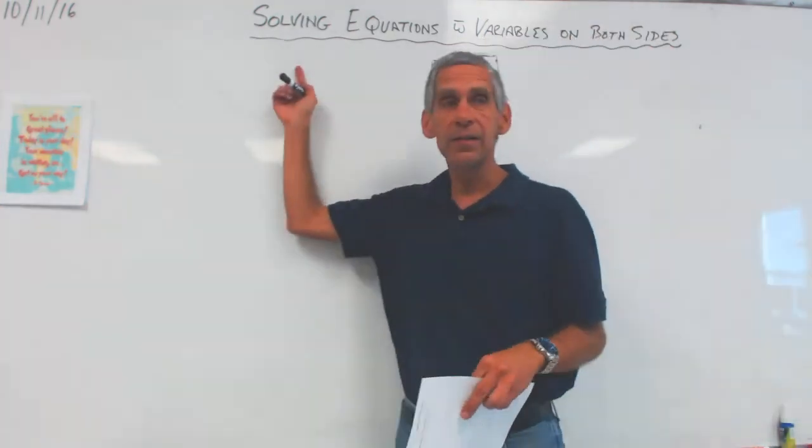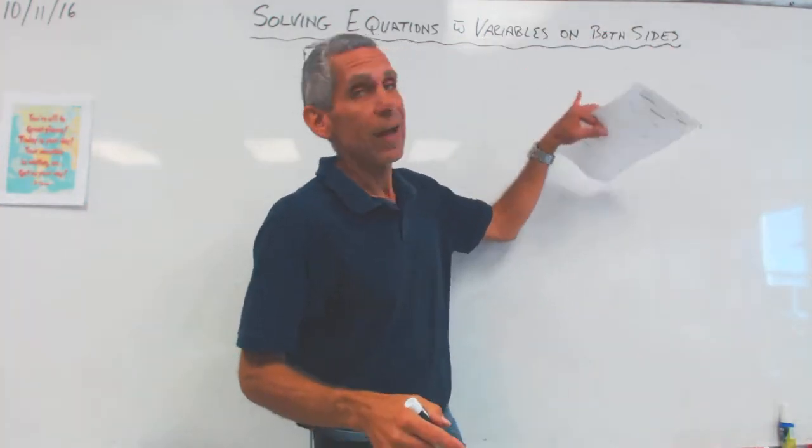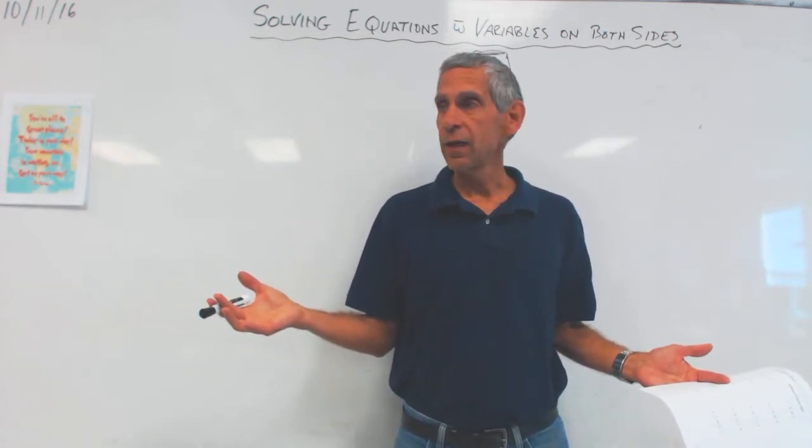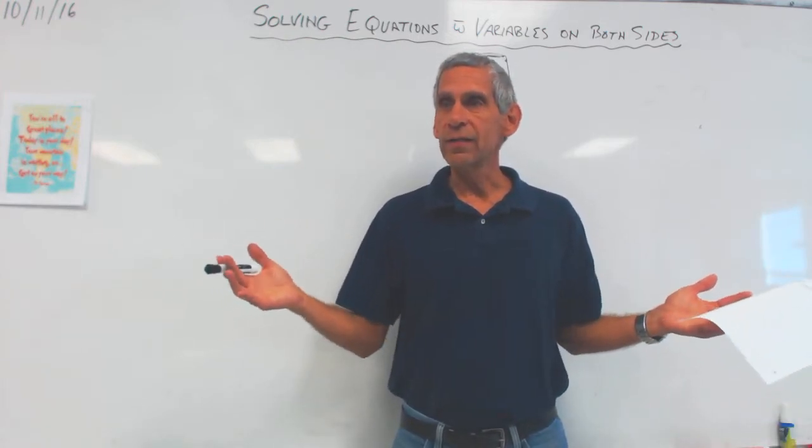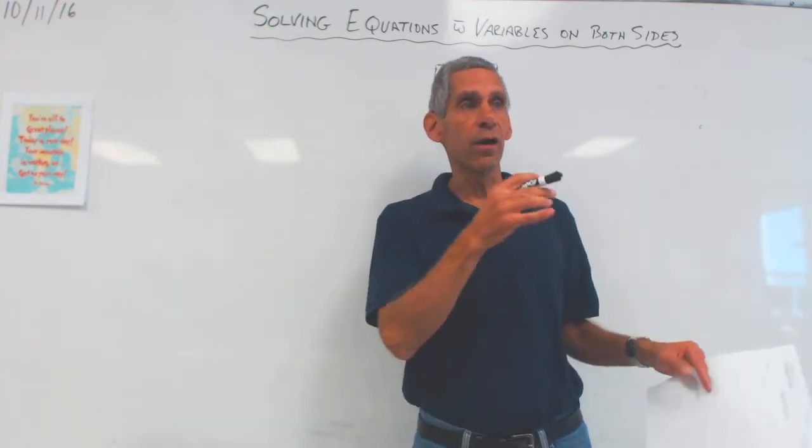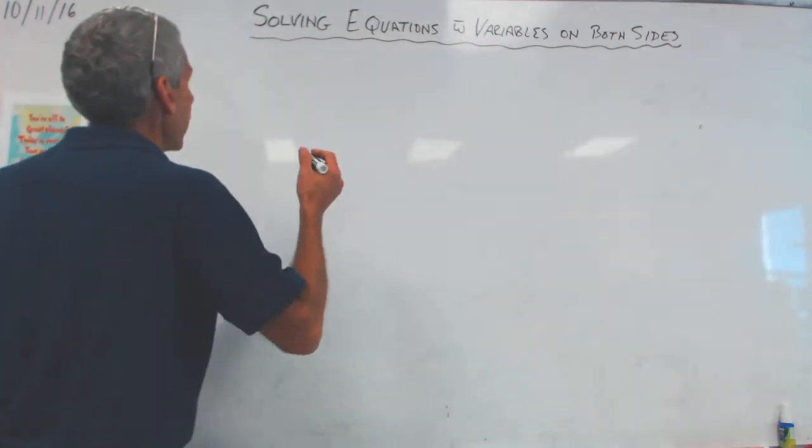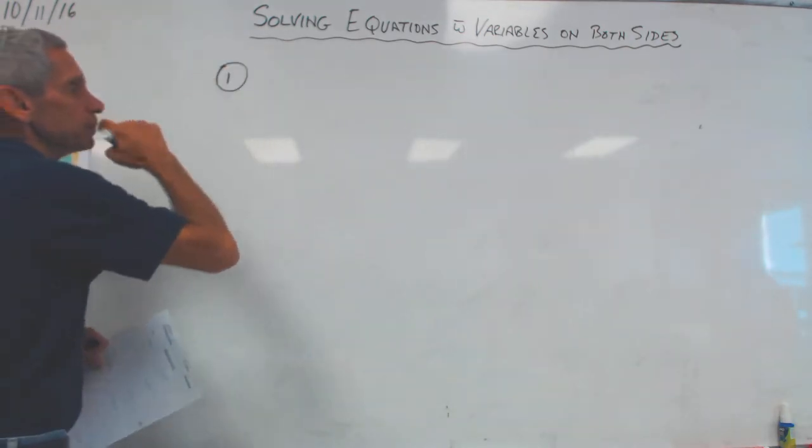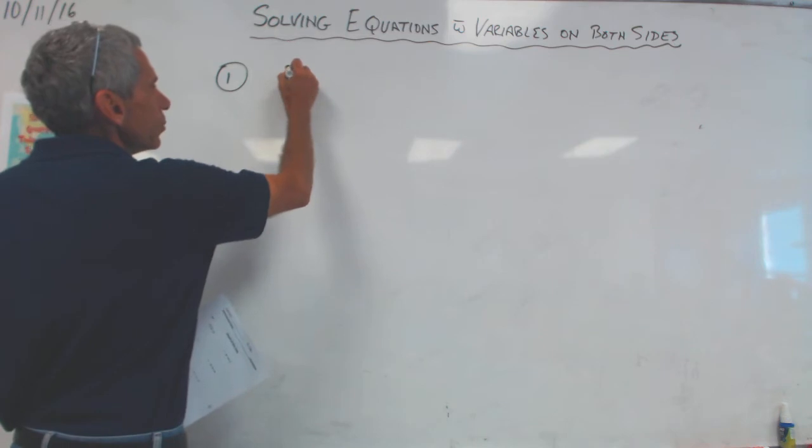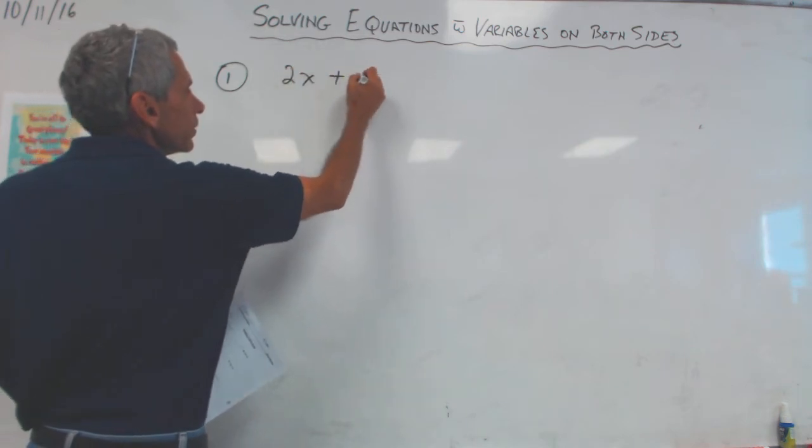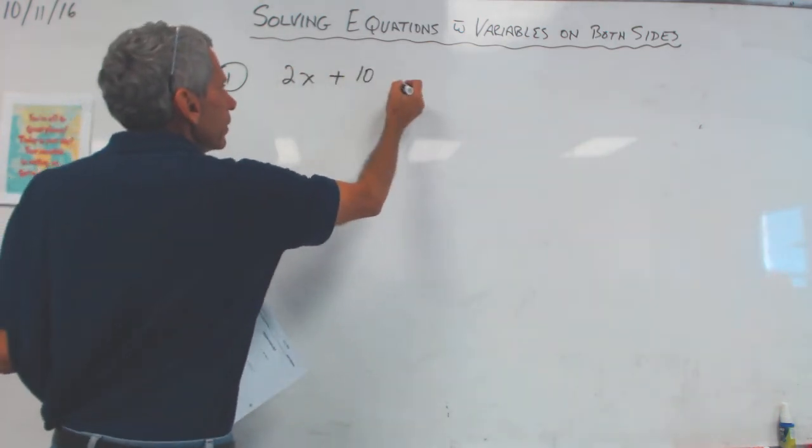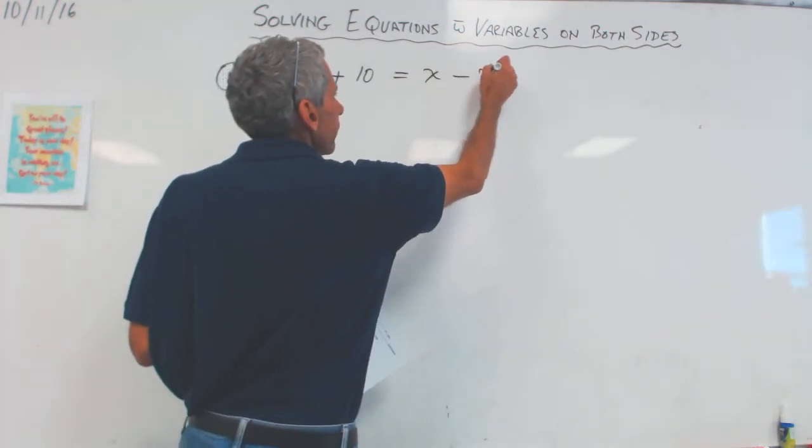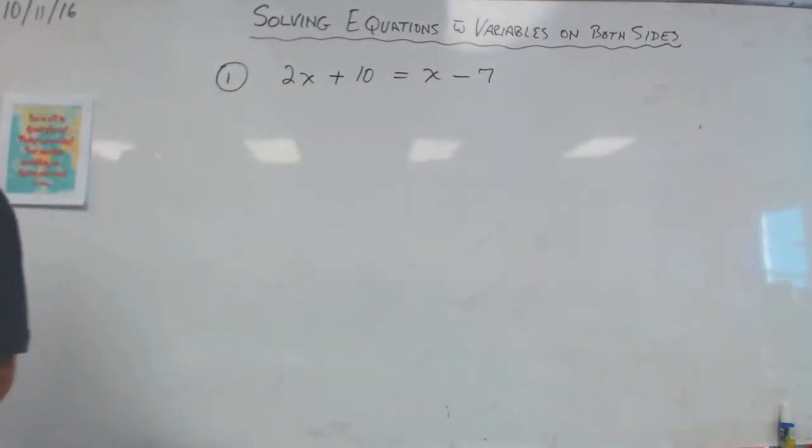Now we're going to talk about equations where the variable is on both sides of the equal sign, on each side of the equal sign. So let's just try one and see what we do. So that's our first example. We have 2x plus 10 equals x minus 7.